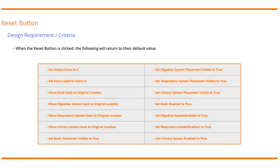Today we're going to continue with project 1.8, Build a Body app, focusing on our reset event handler. We need to keep in mind what criteria must we reset with that reset button. The global score needs to be set back to zero, and we must set the score label back to show score zero. We'll also need to move all organ systems back to their original XY coordinates — the brain, digestive system, respiratory system, and urinary system.